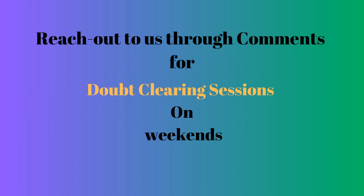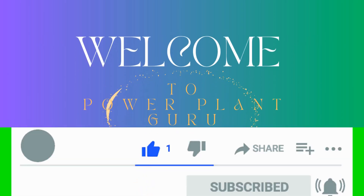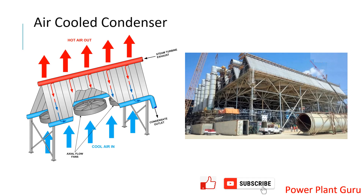Today we are trying to understand how an air cooled condenser works and why it is being used in some places. In today's situation there are water-related scarcity issues and environment-related pressures where you have to be more sustainable in how you generate your power. There is now more thrust to minimize water use per megawatt of power generation.